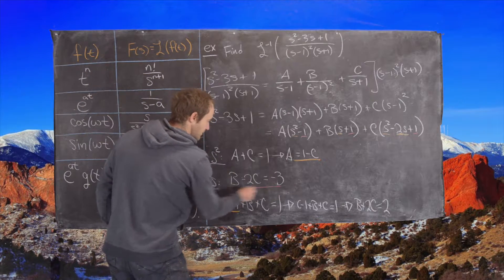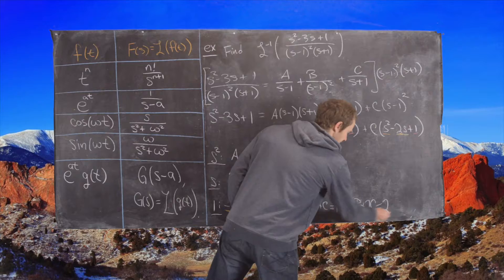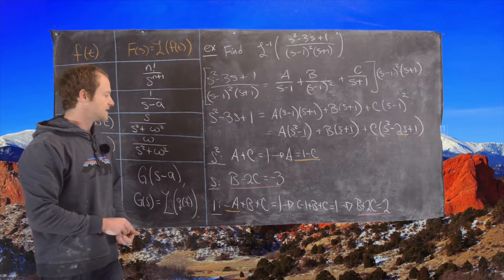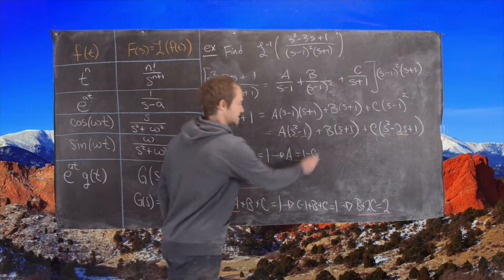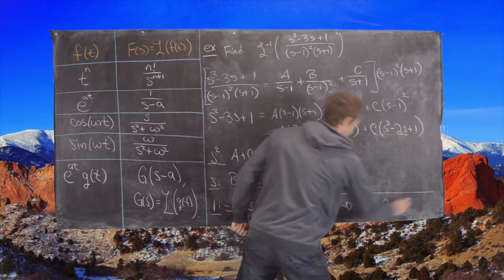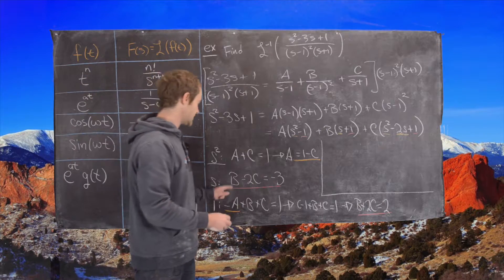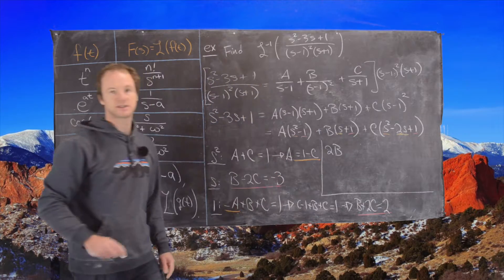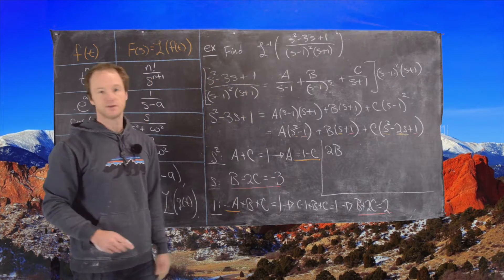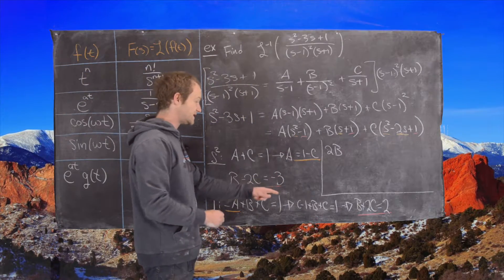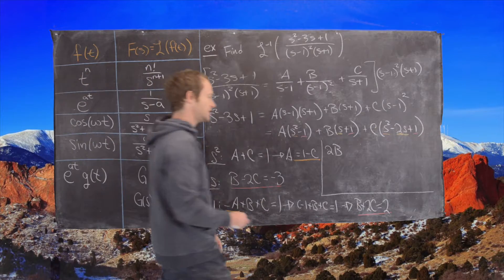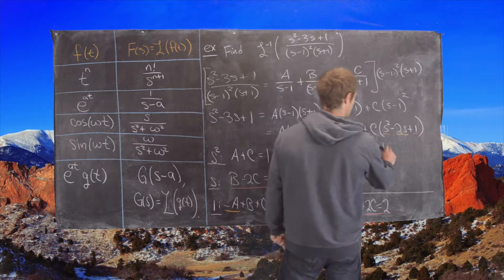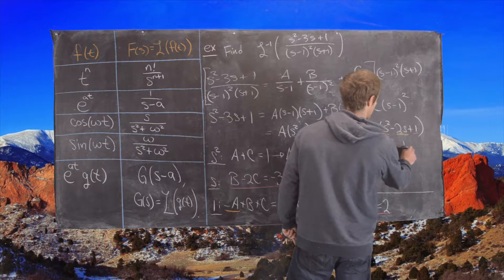Now we see nice structure: we have B minus 2C equals negative 3, and B plus 2C equals 2. Adding these two equations gives 2B equals negative 1, so B equals negative one-half.